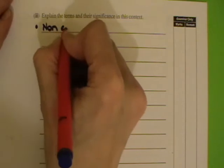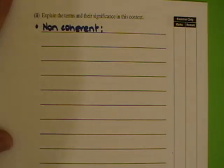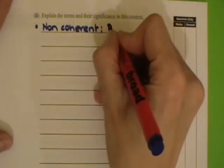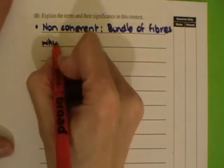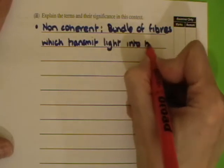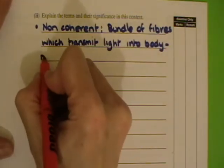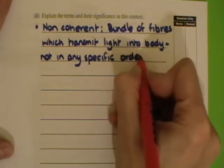Explain the terms and their significance in this context. We'll explain non-coherent first. What that means is that the bundle of fibers along which the light passes into the body aren't in any specific order, because it doesn't matter where the light comes from when it gets down to the body — as long as the light is being passed down, say to illuminate a stomach ulcer. So this is a bundle of fiber optics which transmit light into the body, and they are not in any specific order. The word 'order' is very good to use there.